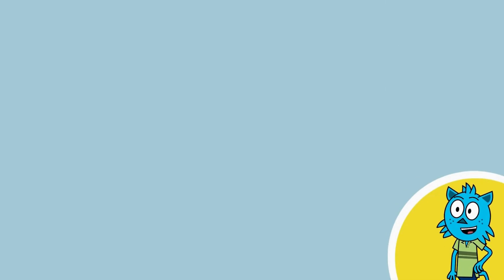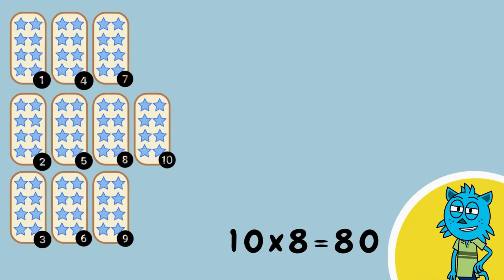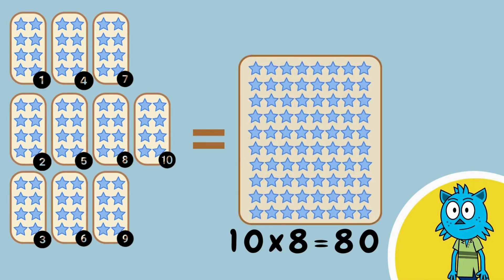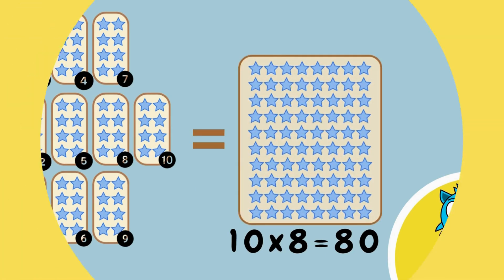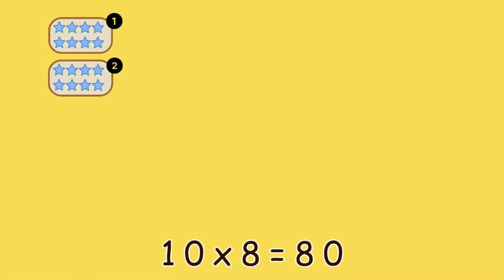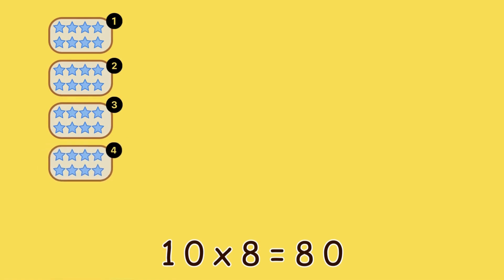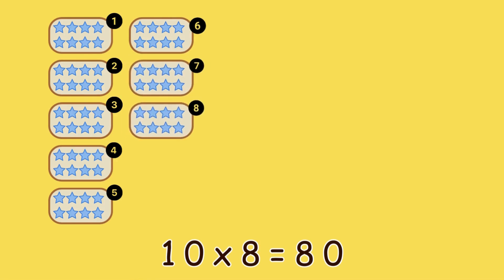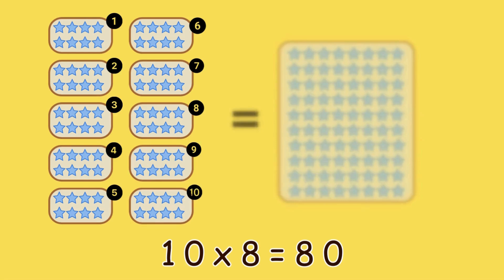Now, let's count stars. Ten groups of eight stars equals eighty stars. Ten times eight — one, two, three, four, five, six, seven, eight, nine, ten — is eighty.